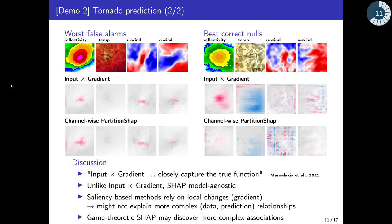There is a discrepancy between the methods for the best-correct nulls. Both methods have instances where image edge pixels are highlighted, but in this case the edge dominates over the storm center for Partition SHAP, which makes no physical sense. This is consistent enough that the model may be exploiting spurious associations present in these cropped storm images. The discrepancy may reflect a more complex relationship more readily detected by SHAP. We'll revisit how to better evaluate which method is correct.